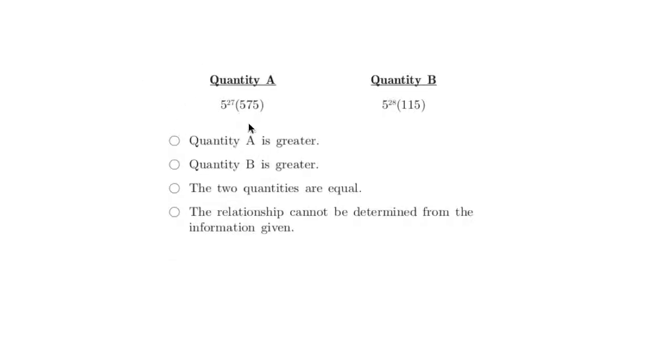5 to the 27th power times 575 versus 5 to the 28th power times 115, which is bigger? Let's eliminate this answer because there are numbers here, there are no variables, so it's certainly possible to tell which of these is bigger.